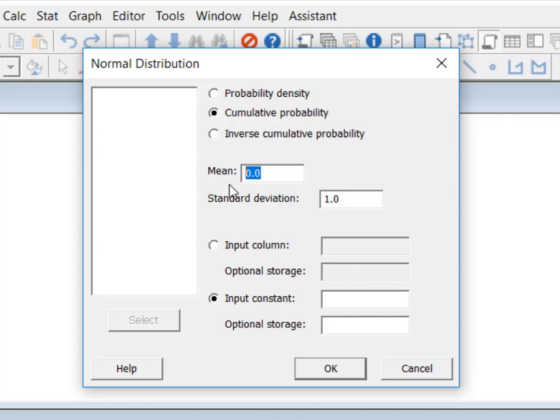We said that we were going to let the population proportion stand in for the mean, that was 55%. We said we were going to let the standard error of the proportion serve as our standard deviation. And we were going to let our sample proportion serve as our input constant. So we have the mean, standard deviation, and input constant. And then we're going to click OK.